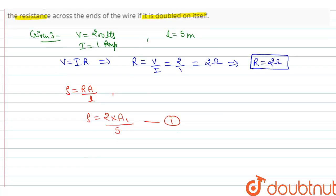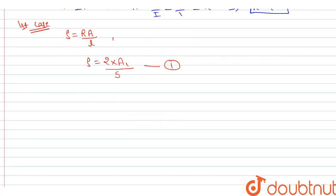Second case: when the length is half and area is doubled, the new resistance is R1.